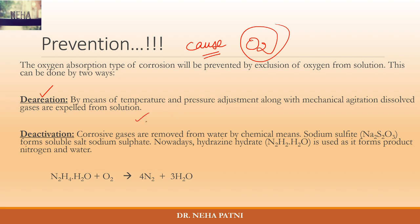A second prevention option is to deactivate the oxygen by forcing it to react with something. For example, adding sodium sulfite causes it to react with oxygen to form soluble sodium sulfate. Alternatively, hydrazine can react with oxygen to form a harmless product. Essentially, prevention is based on understanding the cause of corrosion.